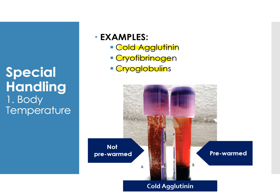Some patients have conditions such as cold agglutinin disease. If you don't pre-warm the tube before drawing blood, what happens is you'll see small coagulations forming. So what you should do is pre-warm the tube itself before placing the specimen or blood into it.